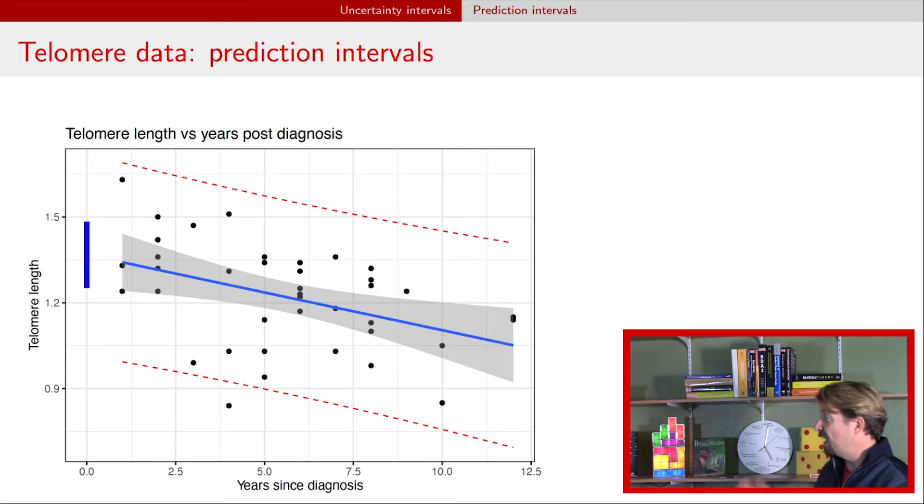I've got now the same picture we've had before, but now I've added on those prediction interval bands for a particular value of x. I just did this for all different values of x, and now we see those two red dashed lines. Those are the prediction intervals. So the idea here is if we had a new observation at some particular value on the x axis, that would give us the uncertainty about where that new observation is going to be. Now you can see that that interval covers almost all the data. These are 95% intervals, so we'd only expect it to cover about 95% of the observations.